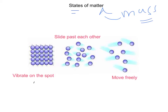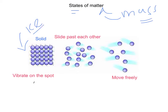So the first one — if you zoom in, you will see these particles, these circles, all they do is vibrate on the spot. Tiny vibrations, but they won't move much. That's what we call a solid. One example of a solid would be ice. Ice is a solid, and there's not much movement, just vibrations on the spot.